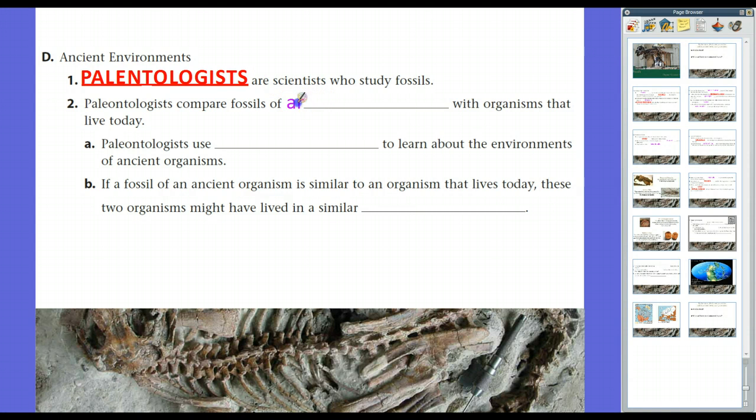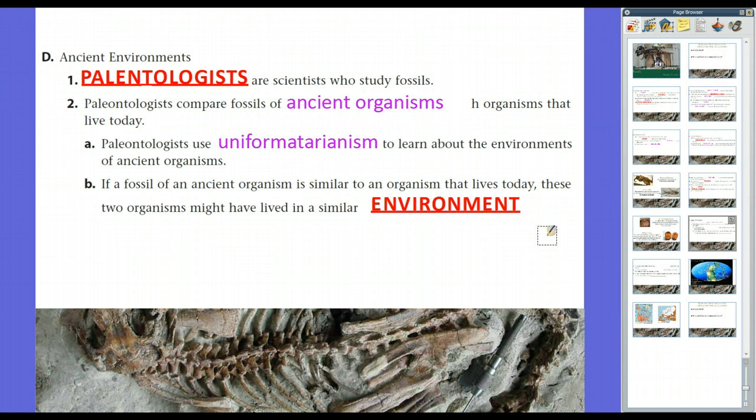So what they do is paleontologists will compare fossils of ancient organisms with organisms that live today. And because of uniformitarianism, if there's a hot, moist climate, chances are these formerly living organisms act like the ones who live in a hot, moist climate today. Paleontologists use uniformitarianism to learn about the environments of ancient organisms. And if a fossil of an ancient organism is similar to an organism that lives today, these two organisms might have lived in a similar environment. Because of uniformitarianism, climates that we see today probably worked and acted the same, with biomes and ecosystems probably working the same just with different organisms than they do now.